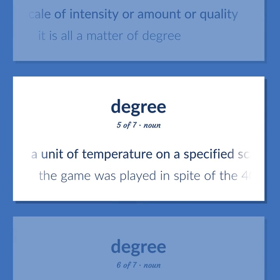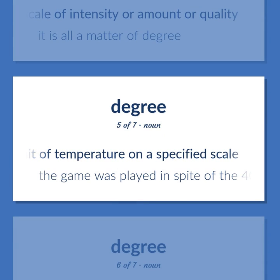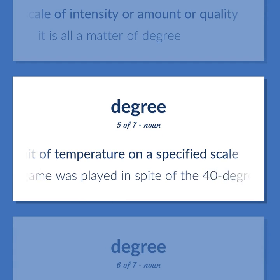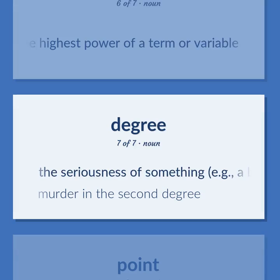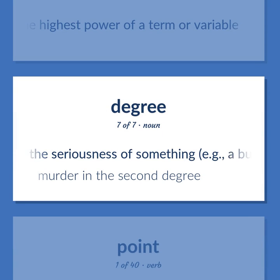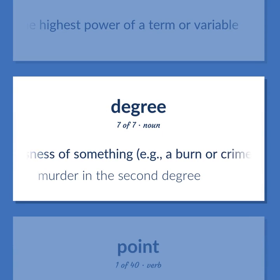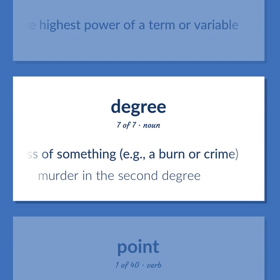A unit of temperature on a specified scale. Example: The game was played in spite of the 40-degree temperature. The highest power of a term or variable. The seriousness of something, e.g., a burn or crime. Example: Murder in the second degree.